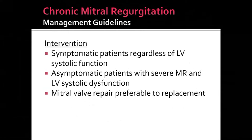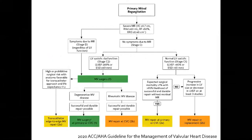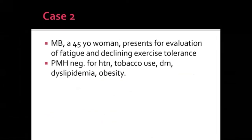Intervention for mitral regurgitation is indicated if the patient is symptomatic regardless of LV function, or if asymptomatic with severe MR and LV dysfunction (EF less than 50%). Mitral valve repair is preferable to replacement due to lower operative mortality. The decision to intervene depends on severity of MR, presence of symptoms, and hemodynamic effects on the LV.